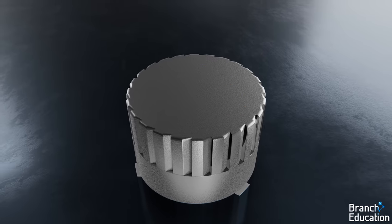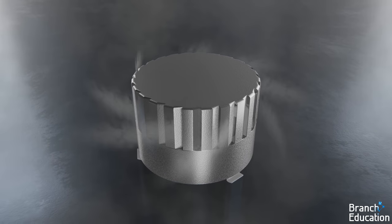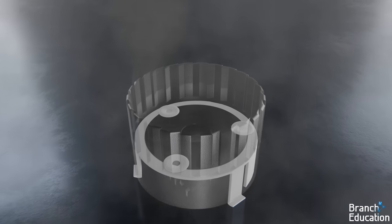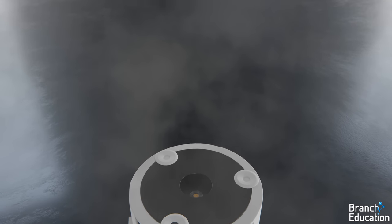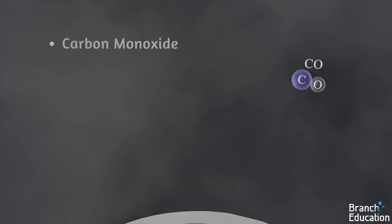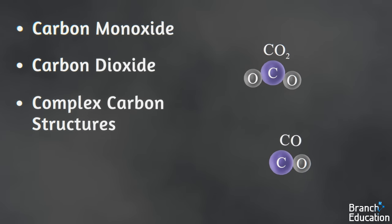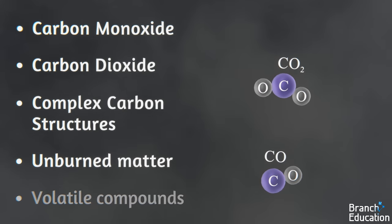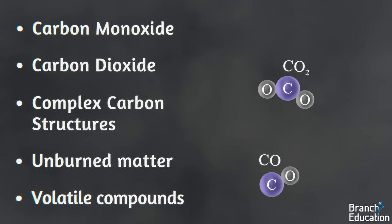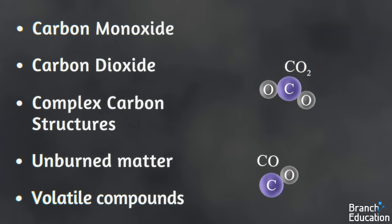However, when smoke comes in through these vents and into the cylinder, the environment and circumstances change. Smoke contains a lot of carbon monoxide, carbon dioxide, larger soot or more complex carbon structures, unburned matter, volatile compounds, and a whole variety of other components.